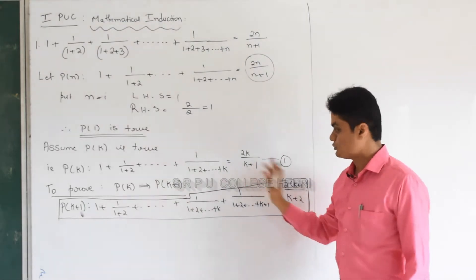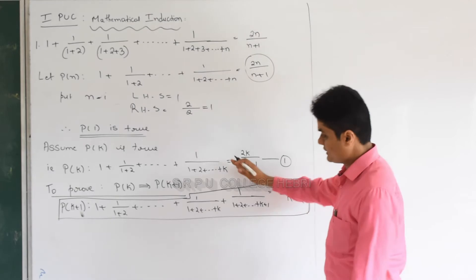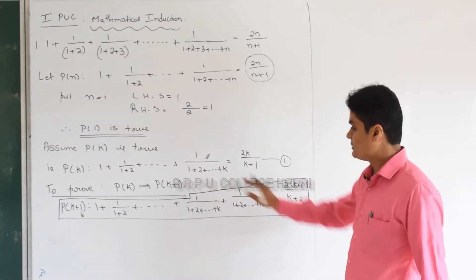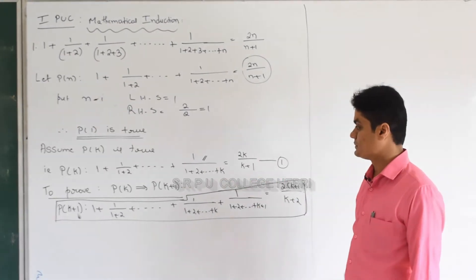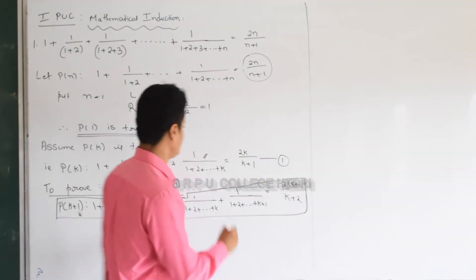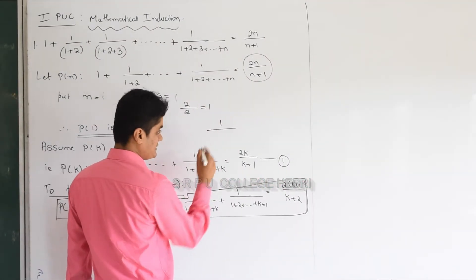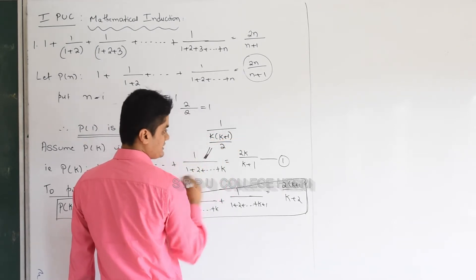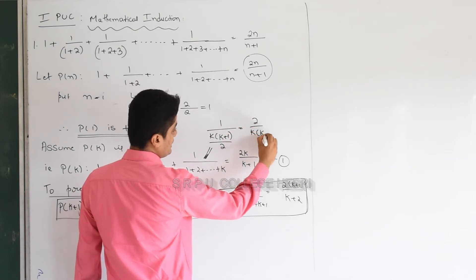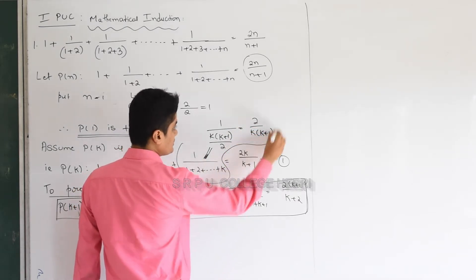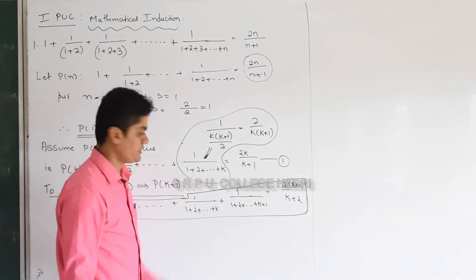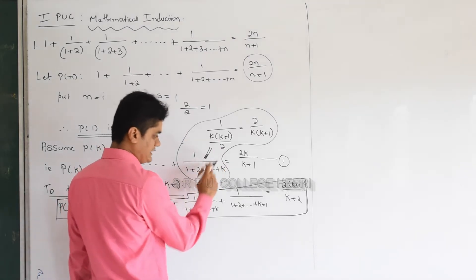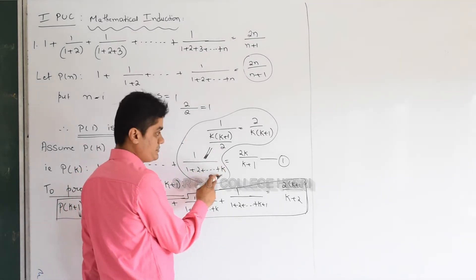We should use equation 1 only to get this. What is this term actually? 1 by (1 plus 2 plus 3 up to k) is nothing but 1 by (k(k plus 1)/2), which equals 2 by k(k plus 1). You can keep this expression like this. And for the next term, using the sum formula for first n natural numbers, 1 by (1 plus 2 up to k plus 1) equals 2 by ((k plus 1)(k plus 2)).